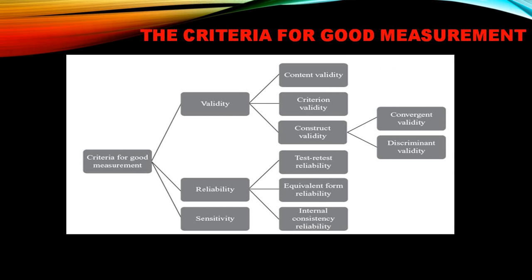Now, what is the criteria for good measurement? For anything to be called a good scale, it needs to have validity, reliability, and sensitivity. Validity can be classified as content validity, criterion validity, and construct validity. Construct validity can further be classified as convergent validity and discriminant validity. Similarly, reliability can be classified into test-retest reliability, equivalent form reliability, and internal consistency reliability. We'll discuss and elaborate on them in the forthcoming slides.